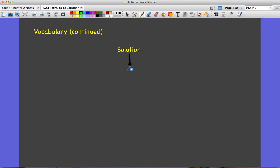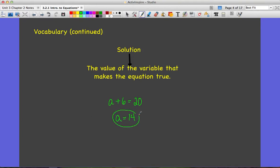And your last word for today, solution. Solution is the value of the variable that makes the equation true. So in this case, if I do have a plus 6 equals 20, I know that the only thing that can make this sentence true is a equals 14. So the solution is a equals 14. Put all of this in your example, but circle this part, showing that this is the solution.